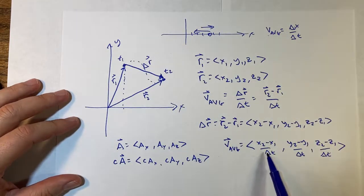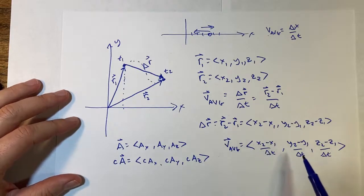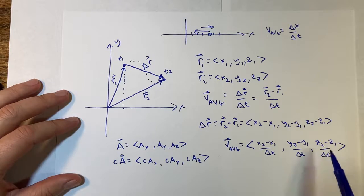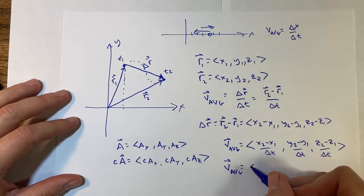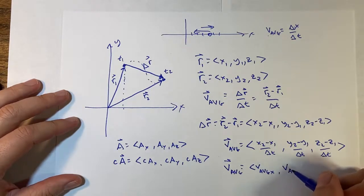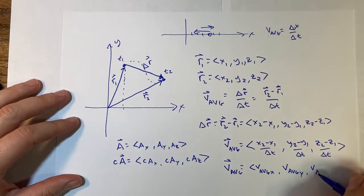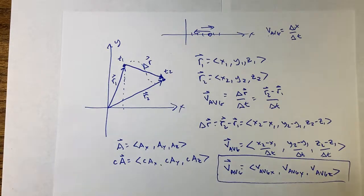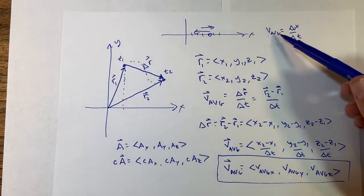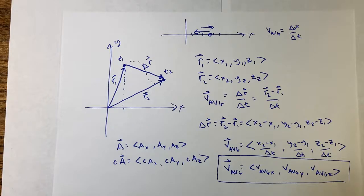Look at this — does this look familiar? This is the velocity in the x direction, this is the velocity in the y direction, this is the velocity in the z direction. So v_average as a vector equals (v_average_x, v_average_y, v_average_z). I know it's all symbols with no numbers, but the goal is to realize we can do the same thing we were doing before but in vector form.